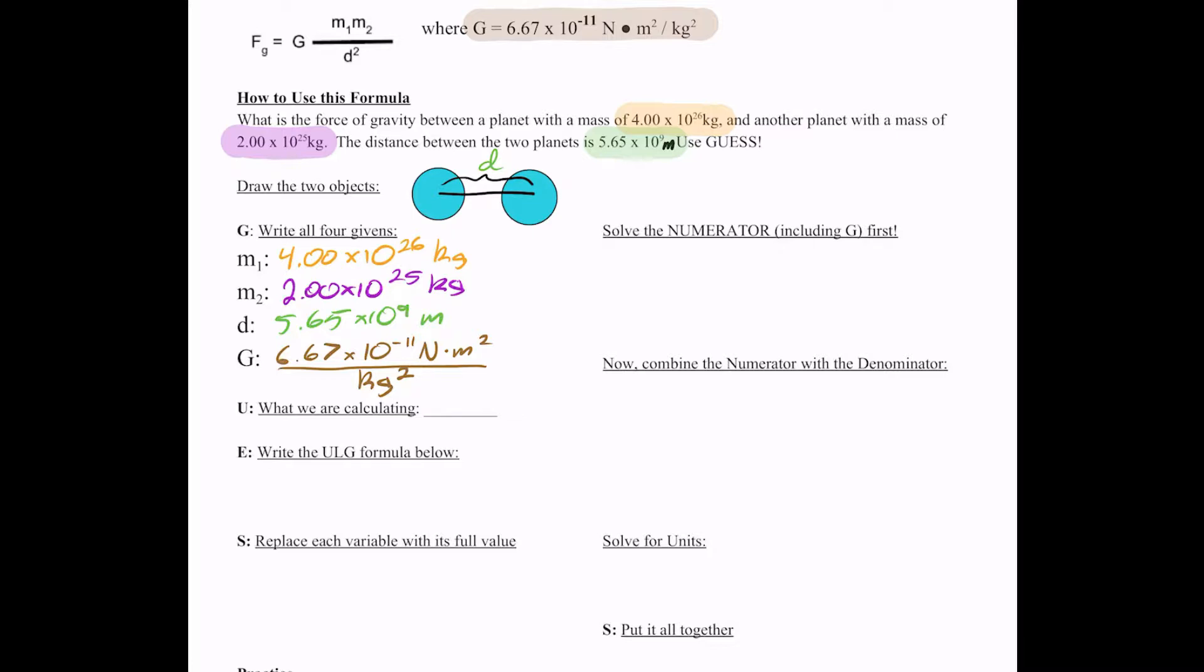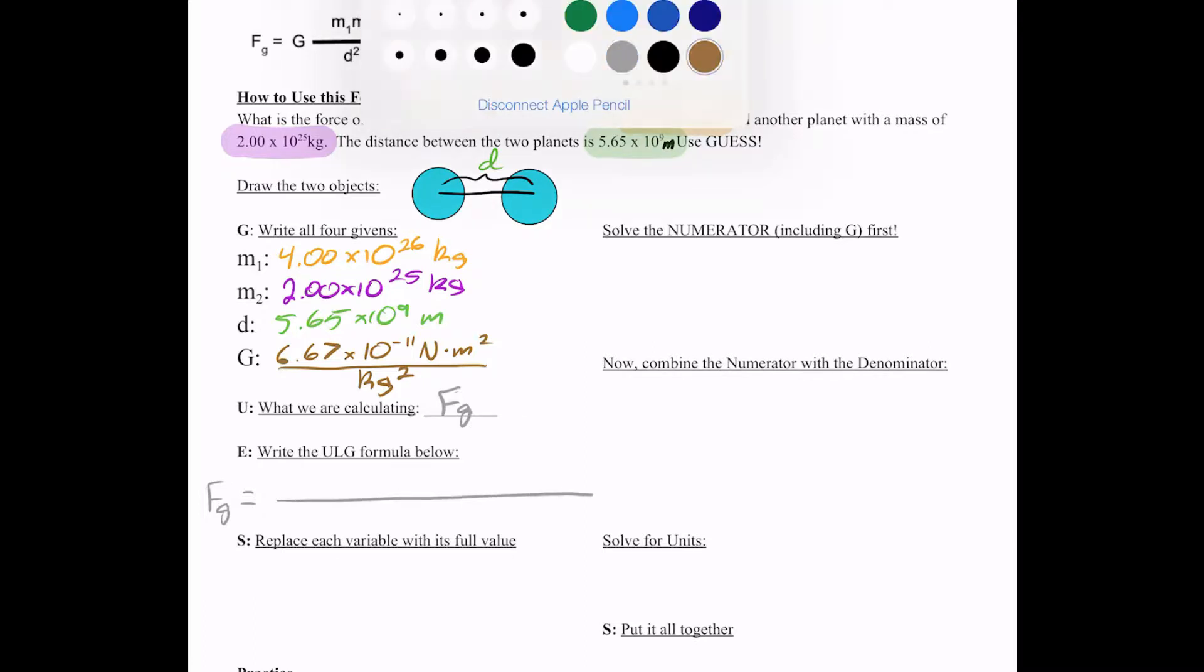Does anybody have any questions about where these values are coming from? So far, so good. If you do have any questions, please stop me as we're going through. Now, we're going to write our formula without anything yet, just as a reference. So, FG is equal to our G constant times mass 1 times mass 2, and that is all over distance squared.